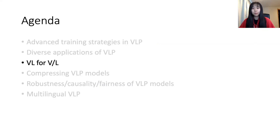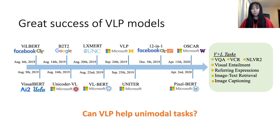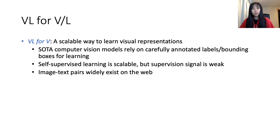Now that we have covered many applications of VLP to VL tasks, this part of the talk focuses on another important aspect: vision and language for vision, or for language. The question is: can VLP help unimodal tasks — pure vision tasks or language understanding tasks? First, let's look at vision-language for vision. VL4V can be a scalable way to learn visual representations.